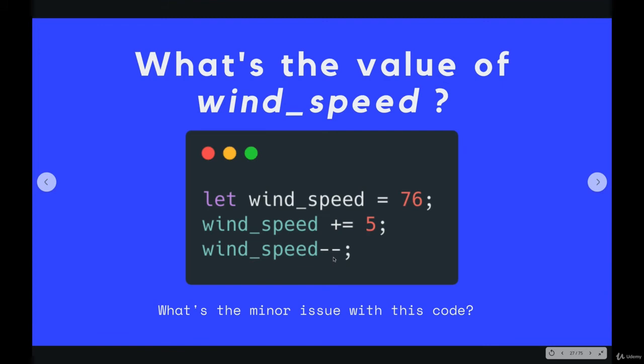And then the last part, what's the minor issue with this code? The issue here is really a stylistic issue. It doesn't follow JavaScript programming conventions as far as the style. Variable names are supposed to be camel cased, not snake cased, which is what we have here with the underscores.